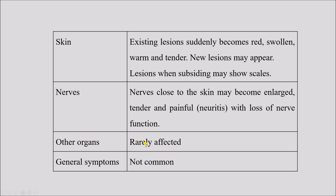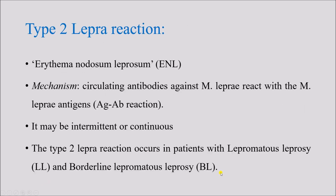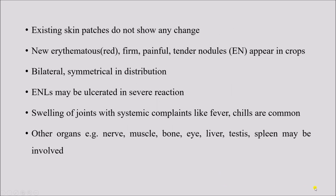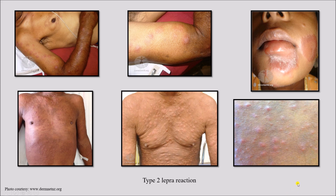In contrast to type 1 where other organ involvement is rare and general symptoms are not very common, these are quite common in type 2 lepromatous reaction. The nodules appear erythematous, shiny, and are probably tender or painful.